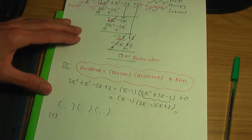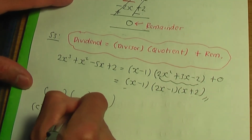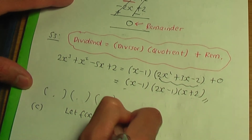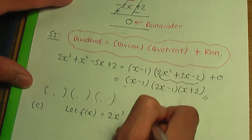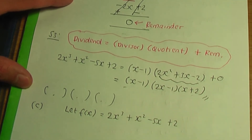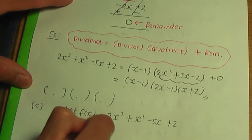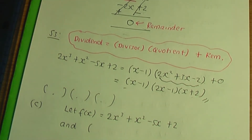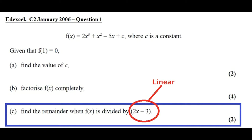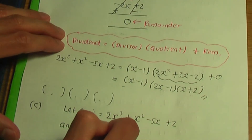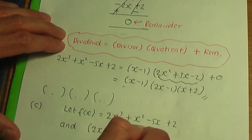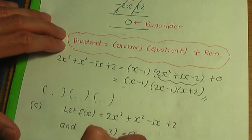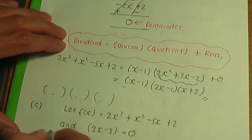Let me go through the remainder theorem. We let f of x equal the polynomial 2x cubed plus x squared minus 5x plus 2. We take the linear term 2x minus 3 and equate it to zero. Rearranging for x gives x equals 3 over 2.